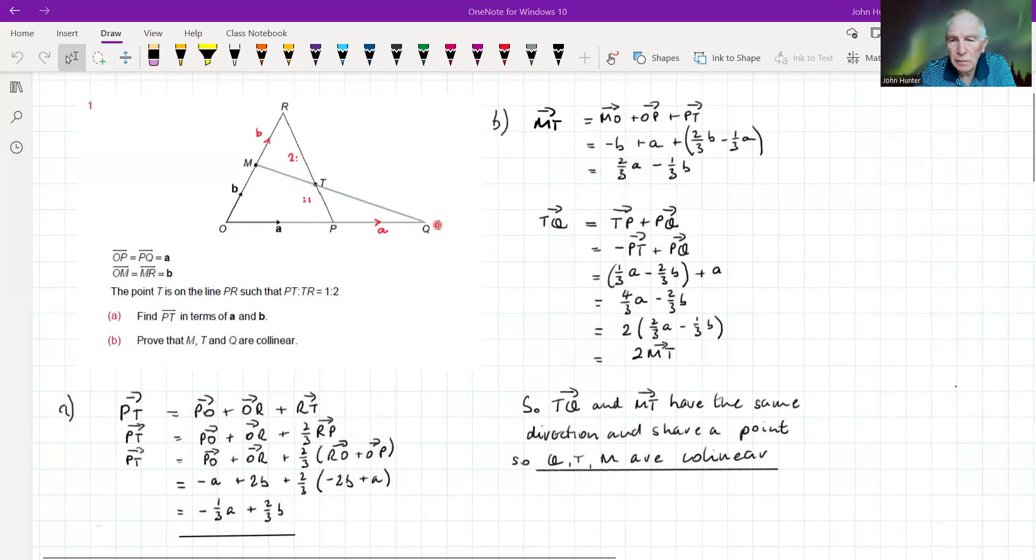Now, how do we know that they're collinear? Well, the requirements for them being collinear can be stated, anyway, as if this vector MT and TQ share the same direction. We might say that they're parallel, but I suppose parallel means that they don't meet. But they share the same direction. And they share a point, T, then they will be on the same line, okay?